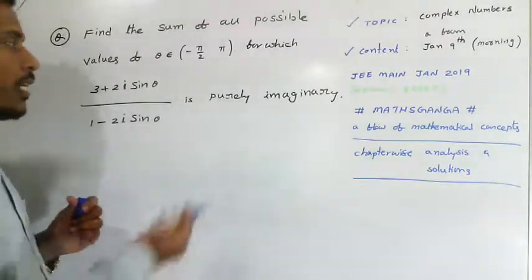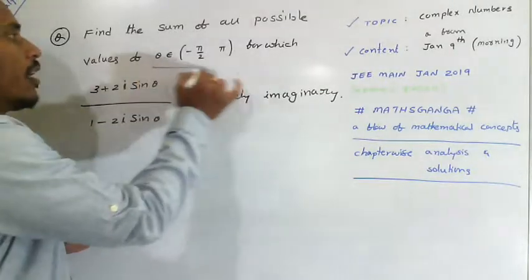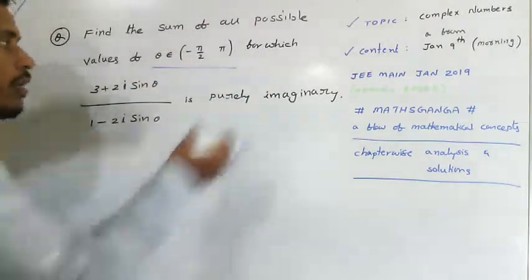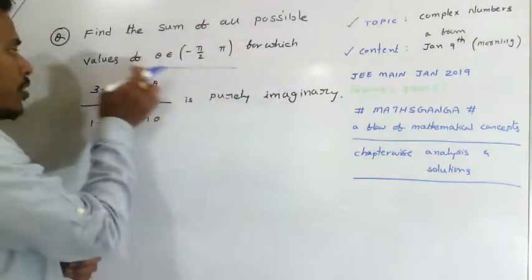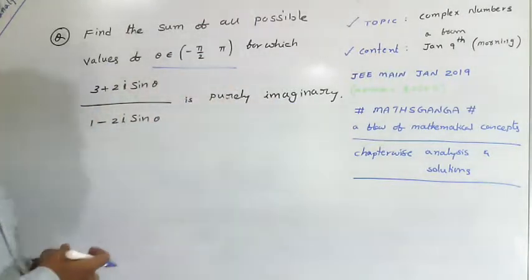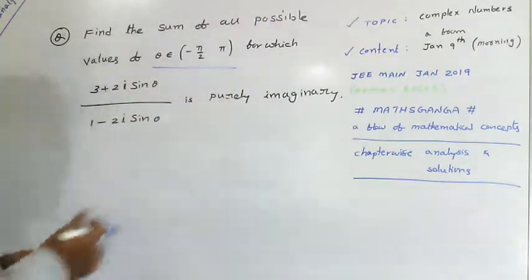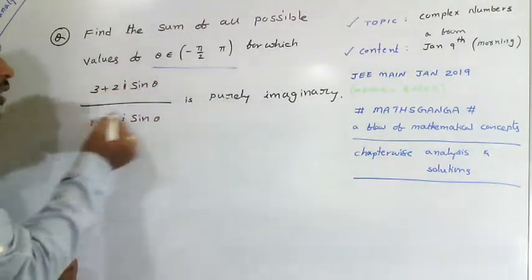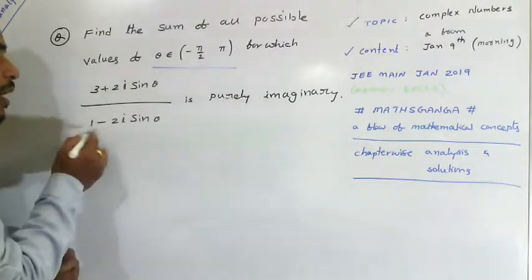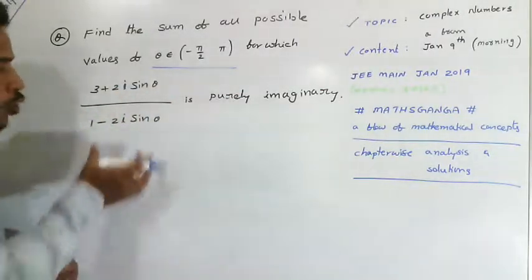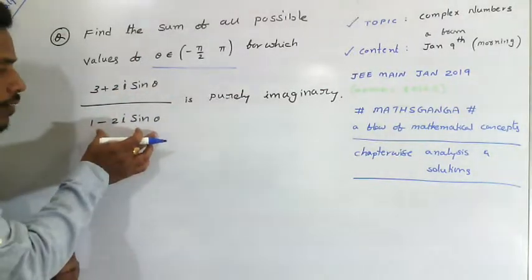We need to find the sum of all possible values of theta in the range of -5π/2 to π, for which (3 + 2i sinθ) / (1 - 2i sinθ) is purely imaginary.